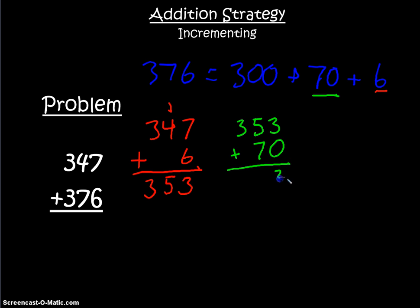3 plus 0 is 3. 5 plus 7 is 12, so I'm going to put 2 in the tens place, and my 10 tens becomes 100. 1 plus 3 is 4, so now I have 423.